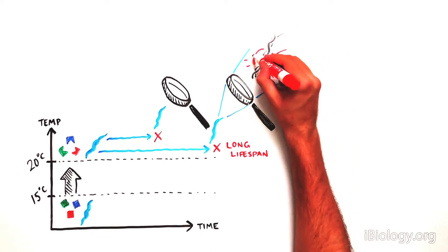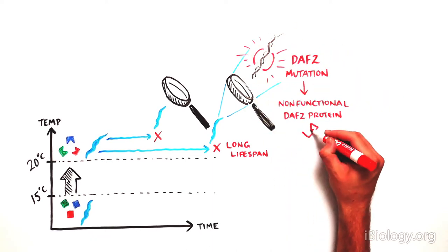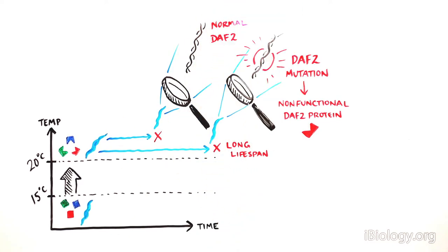These long-lived worms had mutations in the DAF2 gene that caused the DAF2 protein to be nonfunctional. These mutations doubled their lifespan.